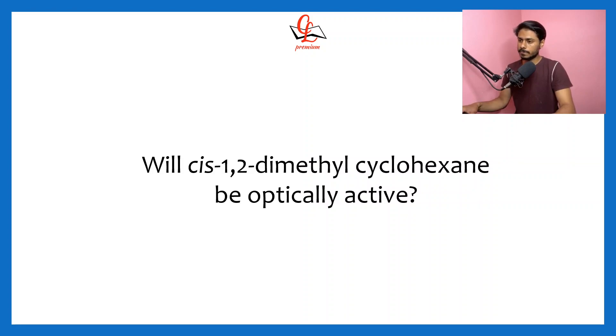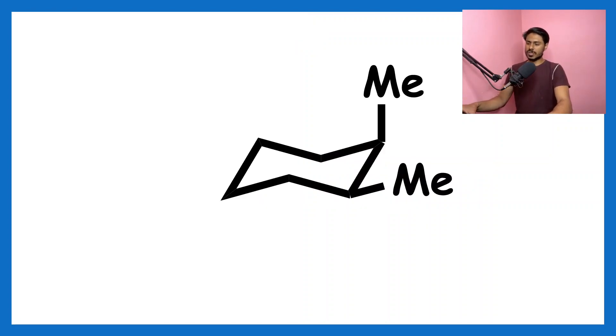This is the structure of cis-1,2-dimethyl cyclohexane. If we want to see whether it is chiral or not, we have to look into the molecule and find out whether any symmetry element which can destroy chirality is present.